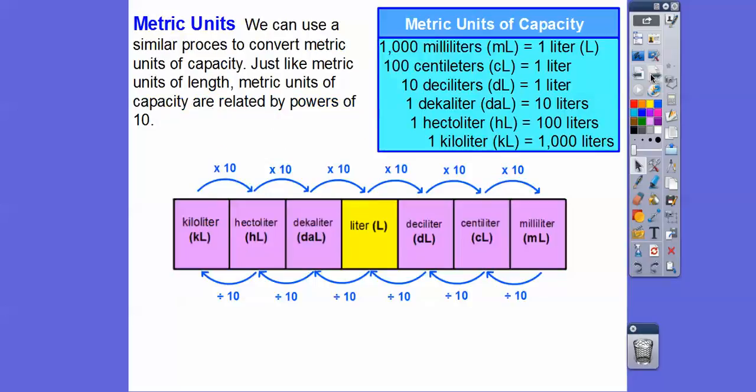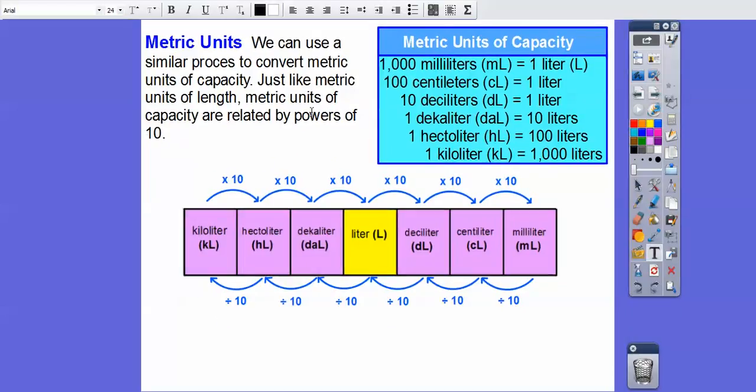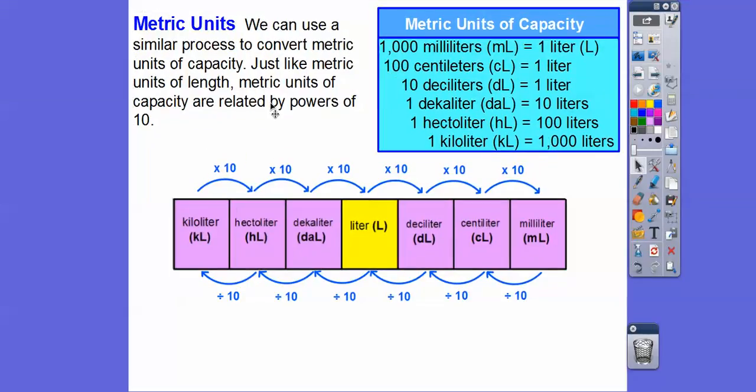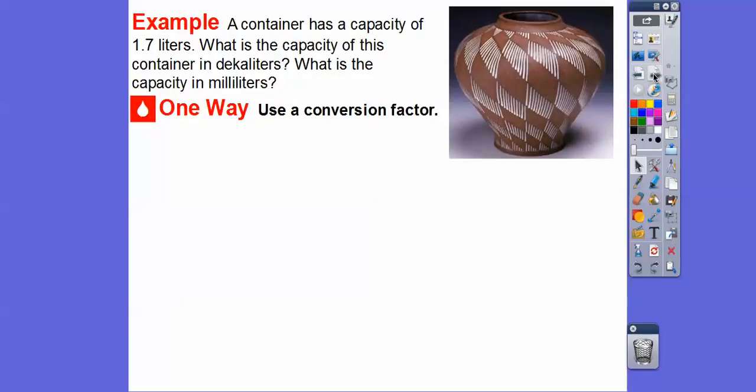In the metric system, we can use a similar process. 1000 milliliters equals 1 liter, 10 centiliters equals 1 liter, 10 deciliters equals 1 liter. So if there's 1 liter, then there's 10 of these, 10 times 10 or 100, 100 times 10 or that many milliliters. We just multiply by 10 when we go to the right and divide by 10 when we go to the left.